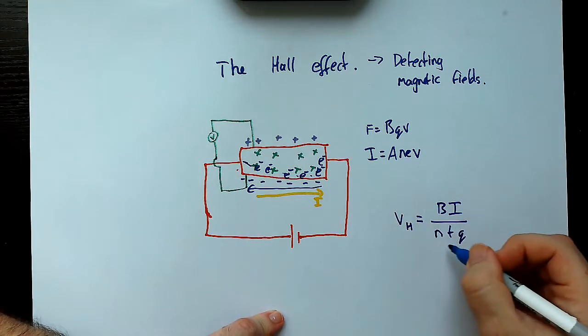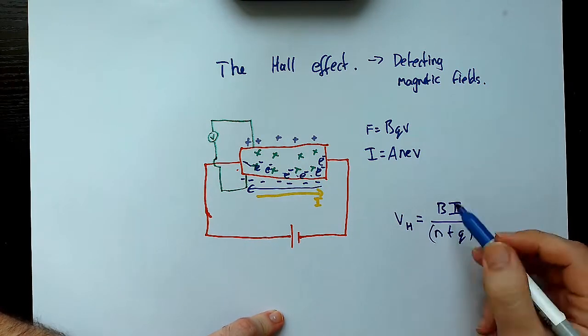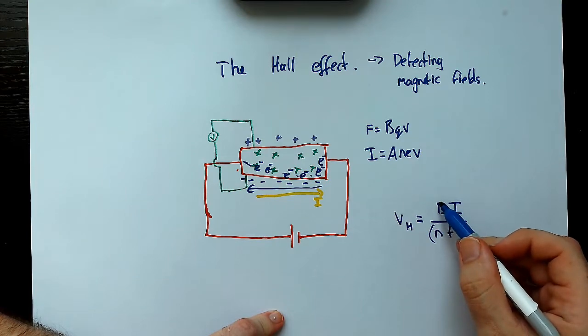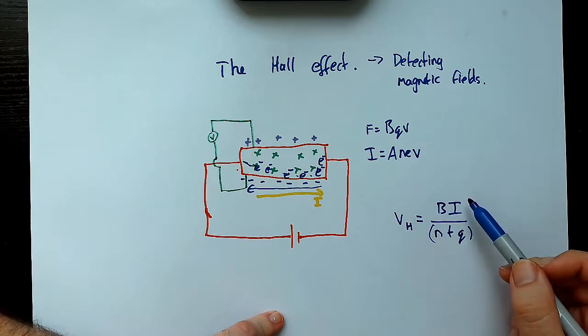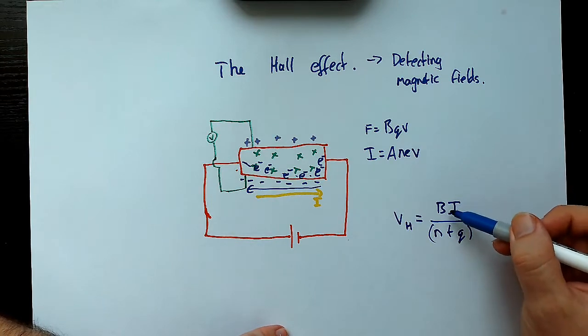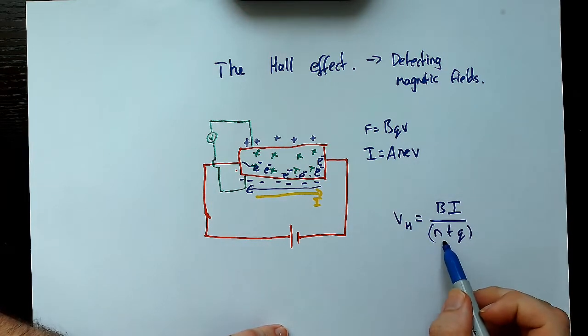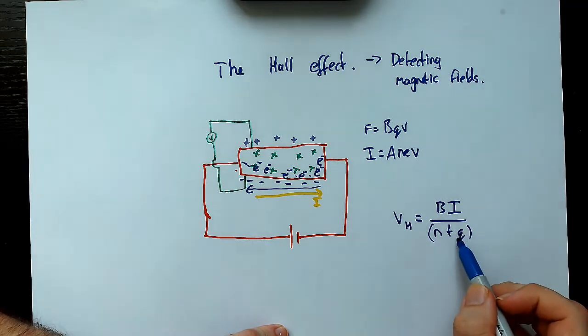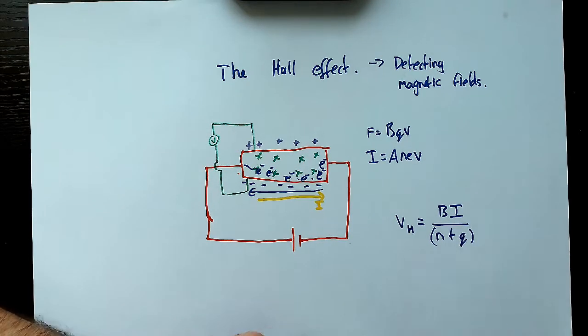Now let's just define what some of these terms are. So obviously B is the magnetic flux density. We should know that hopefully by now. Then we have the current as well, so this is the current. Then we have NTQ. Now Q is the nice easy one, that's the charge. Okay, that's the charge.